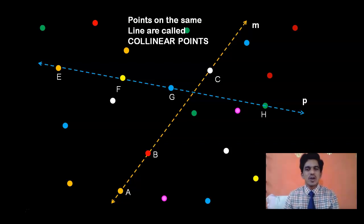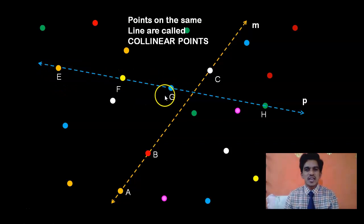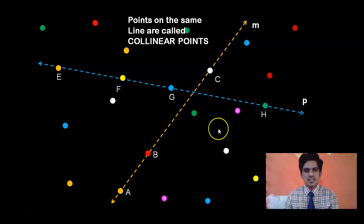The concept of collinear points is very important when we have the case of a triangle. Can we draw a triangle passing through E, F, G, making those three points as vertices of a triangle? It's not possible. Can you draw a triangle using F, G, H as vertices? It's not possible.